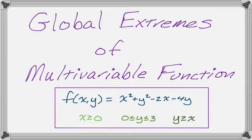In this video we are going to talk about how to find the global extremes of a multivariable function, so that's the maximums and minimums on some sort of region. In particular, we're going to do f(x, y) = x² + y² - 2x - 4y, where x ≥ 0, y is between 0 and 3, and y ≥ x.